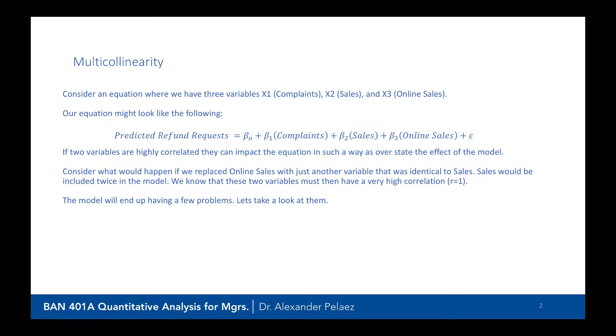If two variables are highly correlated, they can impact the equation in such a way that they overstate the effect of the model. Now, this should be pretty obvious. If I have sales and I include online sales, which is similar or correlated to sales, it could over-inflate our ability to predict refund requests because it's almost as if the sales variable is included twice. So the model will end up having some problems. Let's take a look.